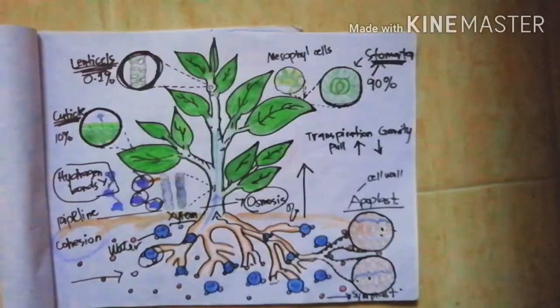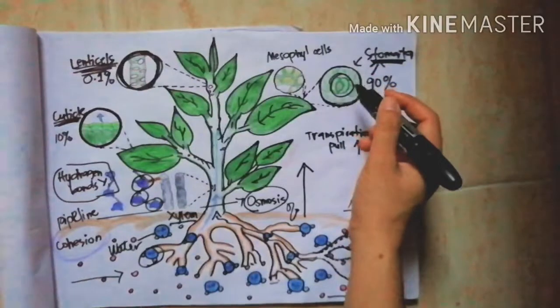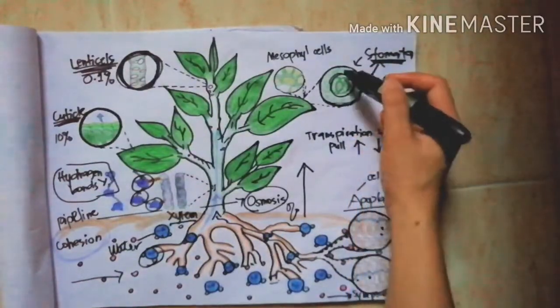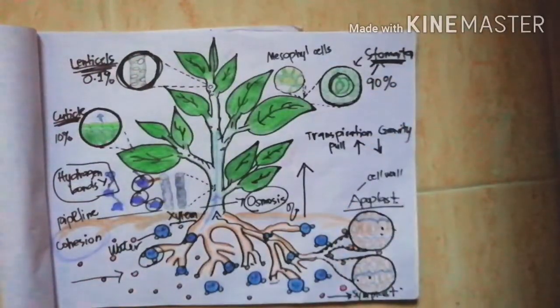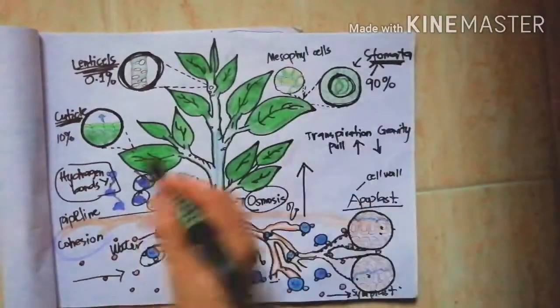If hot dry conditions require the plant to conserve water, the guard cells close the stomata. Although closing the stomata reduces water loss, this also slows down photosynthesis and may cause the plants to overheat.